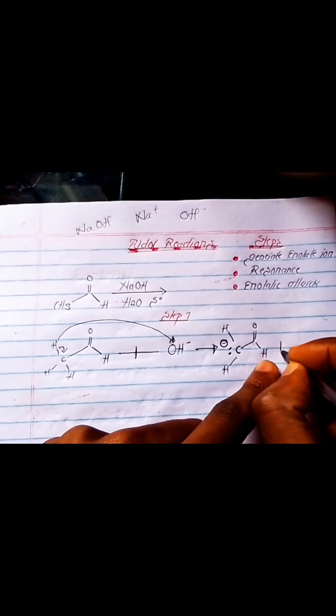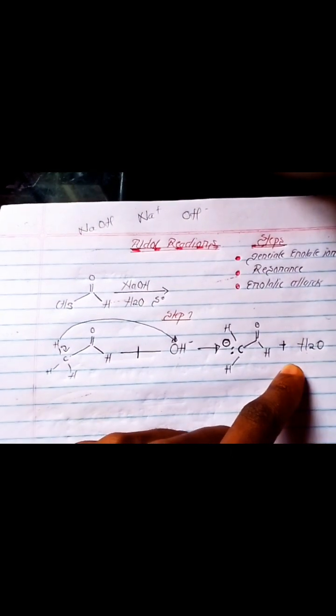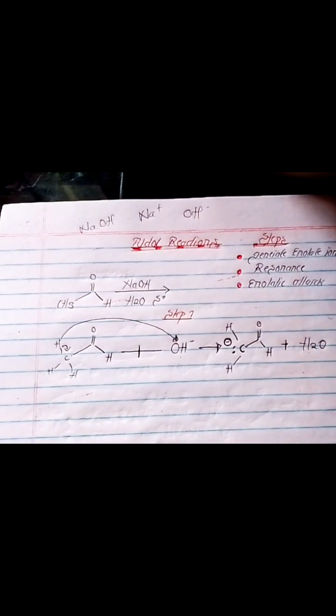And then I redraw the compound the way it is. And then what other thing do you see? This hydroxide, because it has gained one hydrogen, it becomes water. This is your enolate ion. Step one is complete.